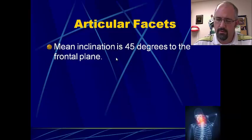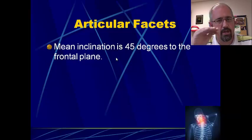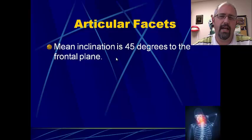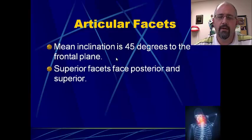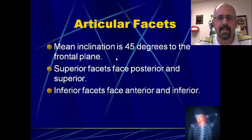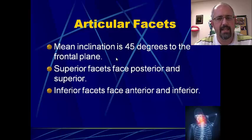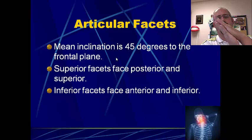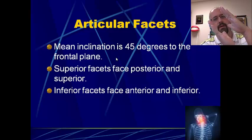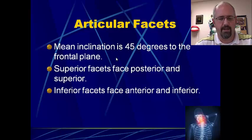When you look at the shape of the facets, the angle of inclination — the angle that the facets are held at — is roughly 45 degrees to the frontal plane, with the superior facets facing posteriorly and superiorly, or back and up. Then the inferior facets face the opposite direction — anteriorly, or forwards, and downwards. These two then sit on top of each other. We have our superior facets which face posteriorly, and then our inferior facets — the superior ones from the vertebrae below, the inferior one from the vertebrae above — and they sit on top of each other at this roughly 45-degree angle.